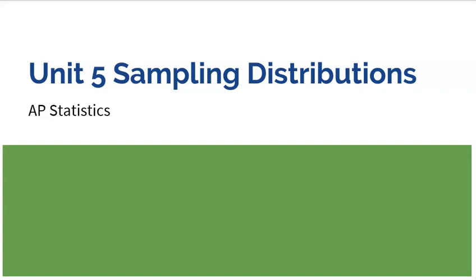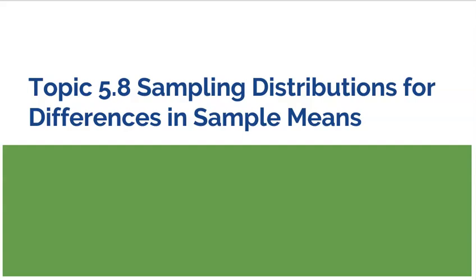Welcome to Unit 5 on Sampling Distributions for AP Statistics. In this video, we're going to focus on Topic 5.8: Sampling Distributions for Differences in Sample Means.